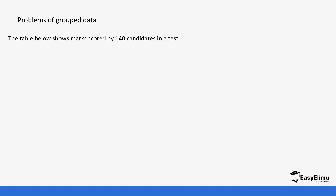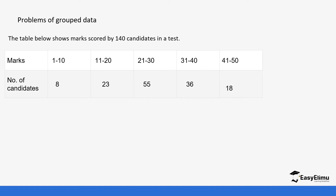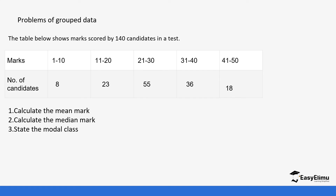The table below shows marks scored by 140 candidates in a test. You are supposed to calculate the mean mark, calculate the median mark, and state the modal class. These are three concepts you have learned over the last three topics. To calculate the mean, remember the formula is sum of fx over sum of f. The number of candidates in this case will be f, so we need to get the value of x.